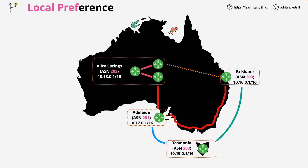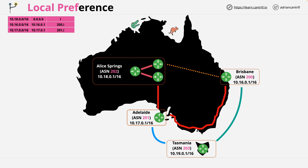These routers are connected to the border routers independently, so we have IBGP running internally and EBGP running externally. In terms of external routing at Alice Springs, we have the same set of routes as shown previously: a route for Brisbane, 10.16.0.0/16, going direct to Brisbane; a route for Adelaide, 10.17.0.0/16, going direct to Adelaide; and two less efficient routes for Brisbane — the first going via Adelaide, and the second going via Adelaide and Tasmania.